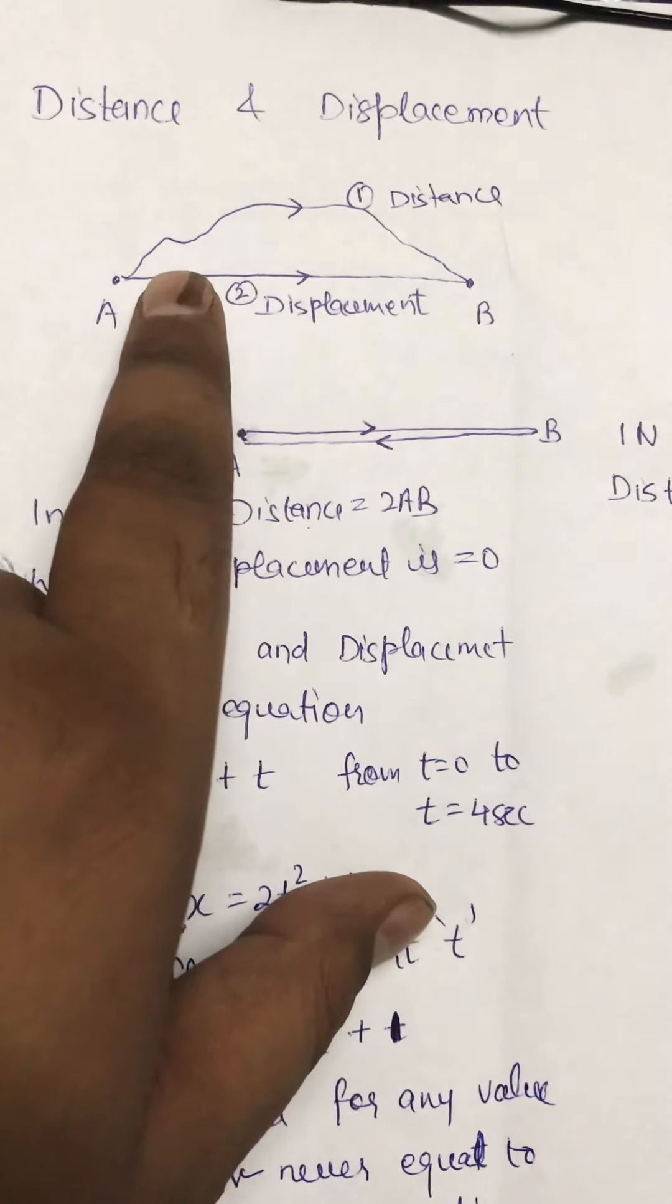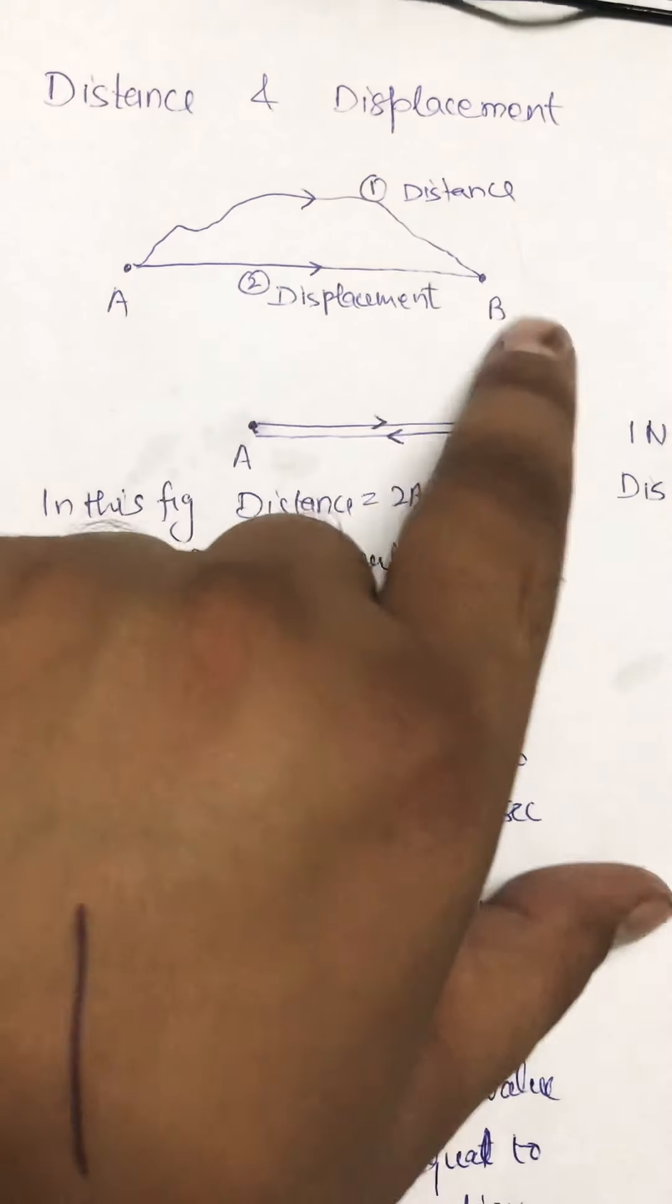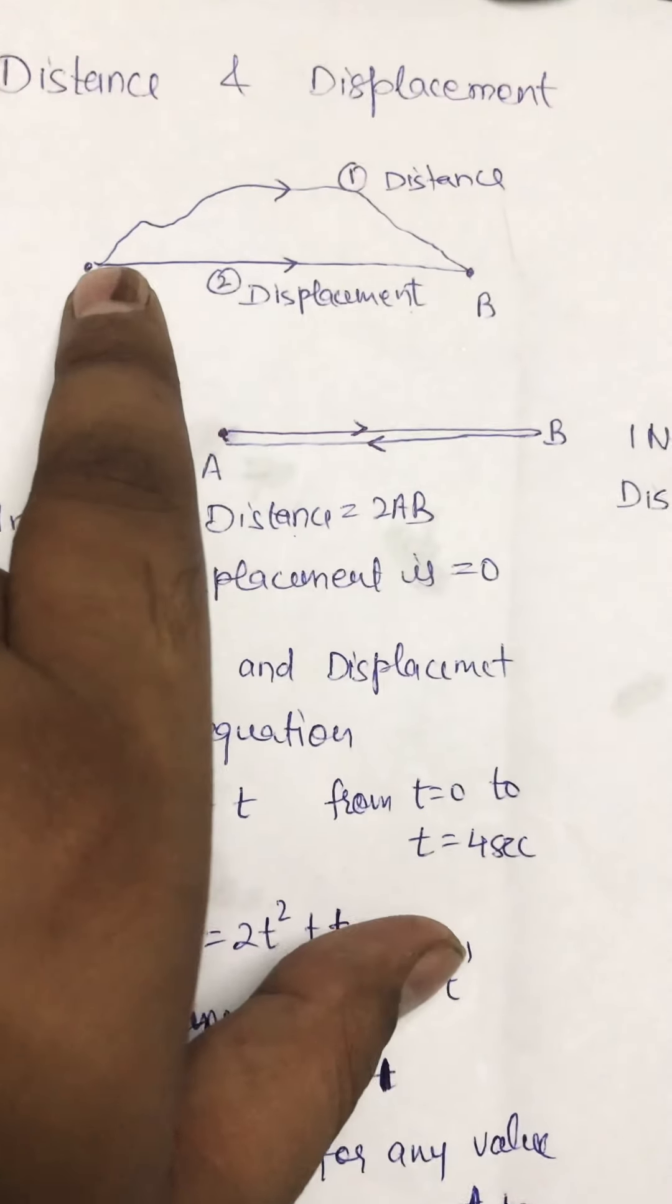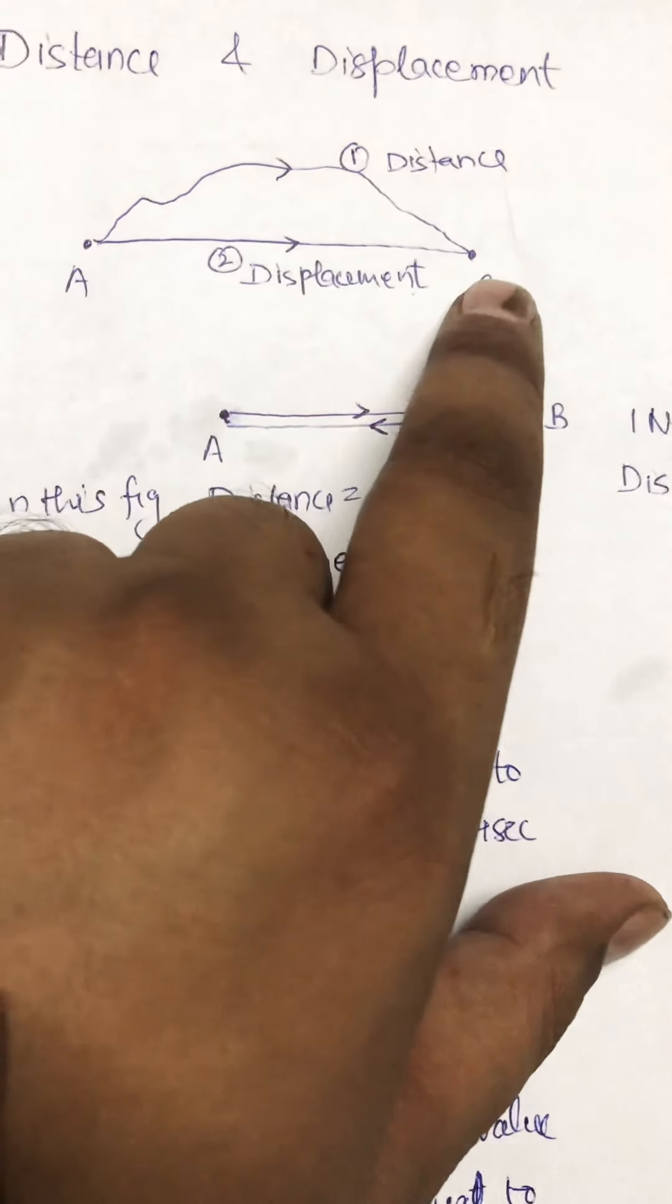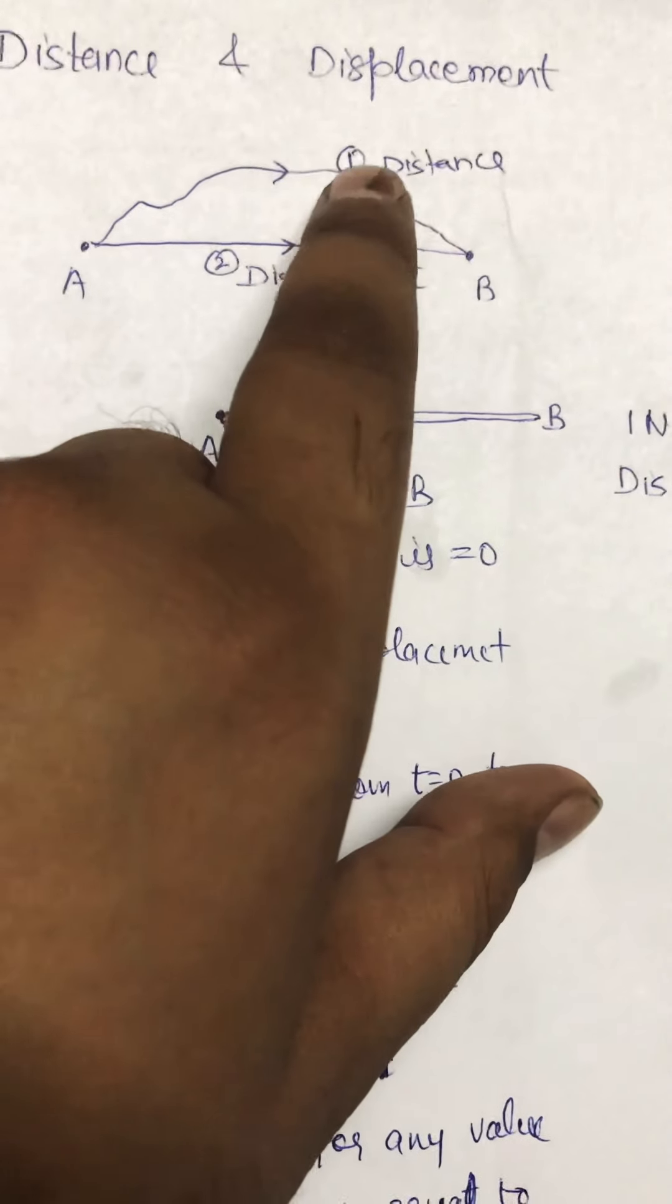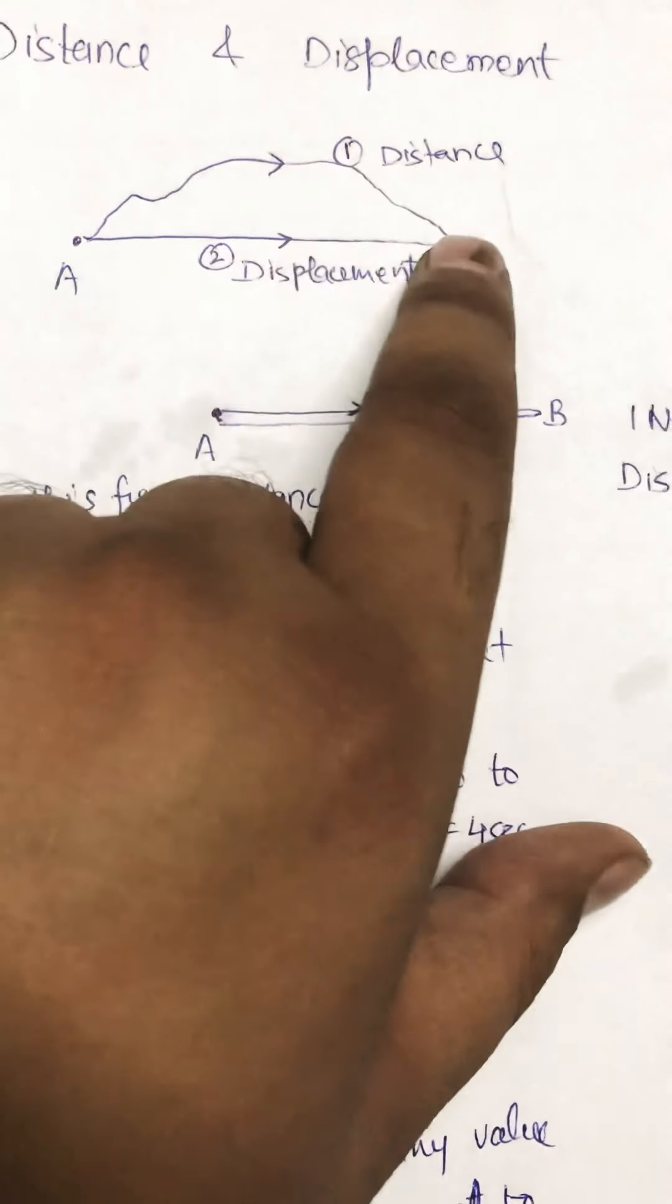First we see theoretically. Let me suppose we choose two points A and B. The body moves from point A to point B via path 1. This is known as distance.